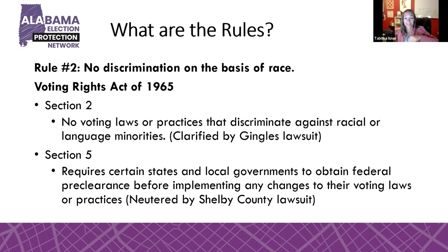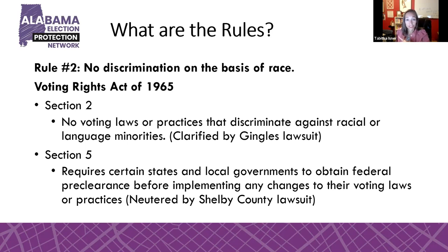The Supreme Court told Congress they need to create a new list based on newer data about which states and localities should have to go through preclearance. Congress has not done that, so no one has to go through preclearance. This year was the first time we have done redistricting since the Shelby decision came down — the first time since 1965 that Alabama has been able to change its maps without any federal oversight. You should be quaking a little bit. It's a little scary.